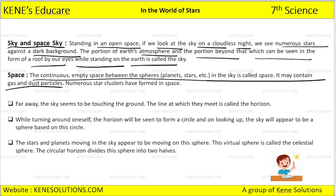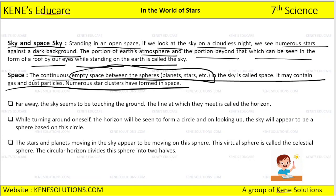Space may contain gas and dust particles. Numerous star clusters have formed in space. Space means that empty space between the spheres, between the planets and the stars. Far away, the sky seems to be touching the ground — the line at which they meet is called the horizon.